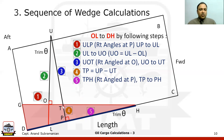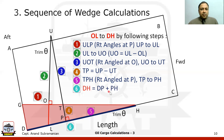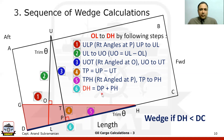In step 5, using small triangle TPH right-angled at P, tan θ = TP / PH, so PH = TP / tan θ. Then in step 6, DH = DP + PH, where DP is the distance from the aft bulkhead of the ullage port. DH is what decides whether it is a wedge. If DH is less than DC — the length of the tank — it forms a wedge. Please make this statement very clear in your examination answer, so it is evident why you are doing these calculations further on.